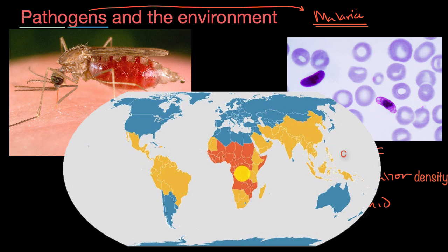What you see in these orange regions are where you see the highest prevalence of malaria. The yellow regions are where you might see malaria, but not as high of a prevalence. And then the blue areas are where you don't see malaria.